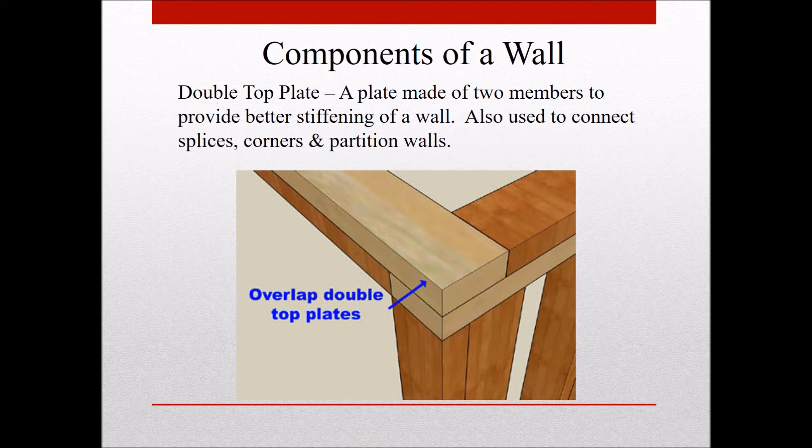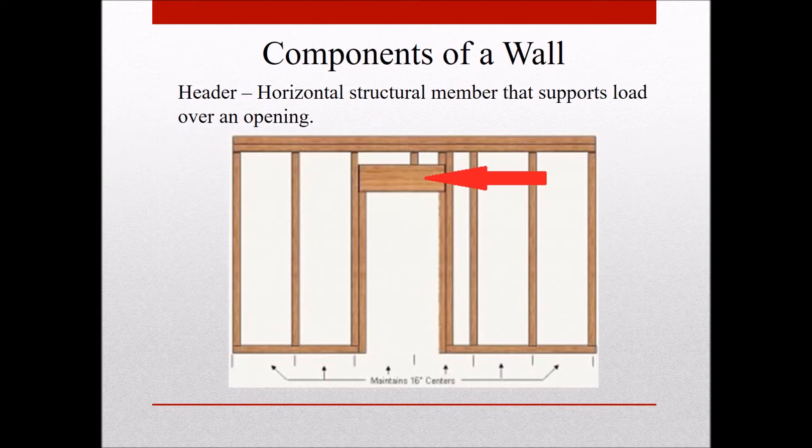The double top plate is shown here. Below is the top plate, and the two-by-fours on top are the double top plates. These help to connect walls where there's an intersection — maybe a corner, a T, or even where you have a long wall and need to splice it in the middle.